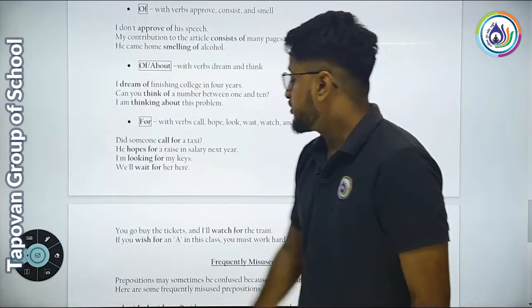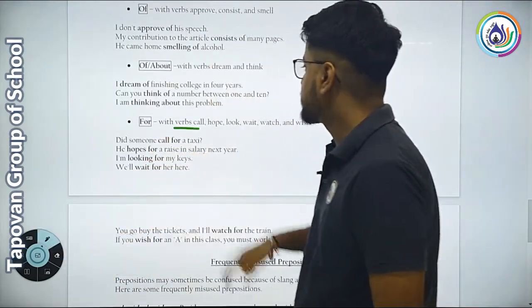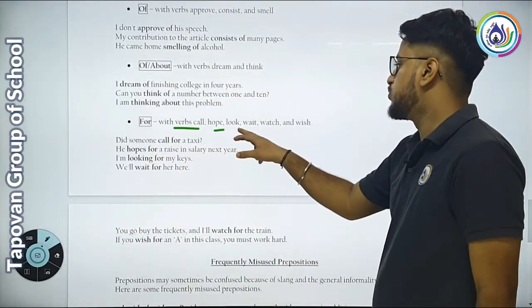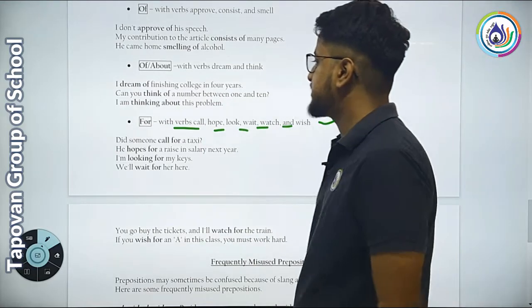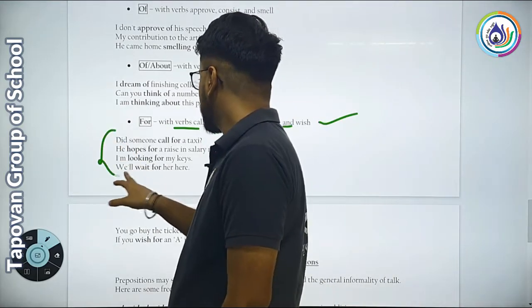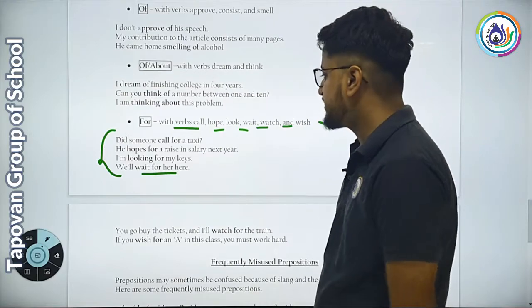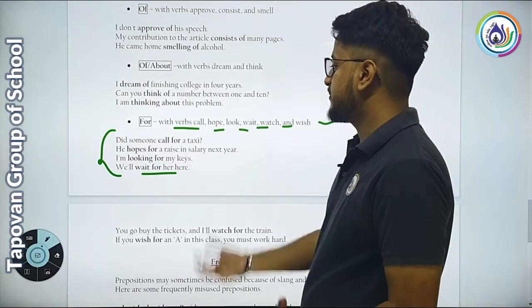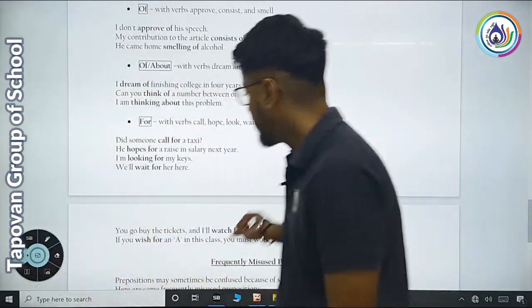For is used with verbs call, hope, look, wait, and watch. Did someone call for a taxi? He hopes for a raise in salary next year. I am looking for my keys. We will wait for her here.